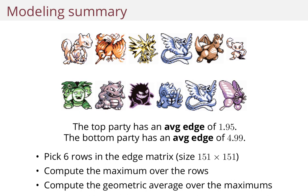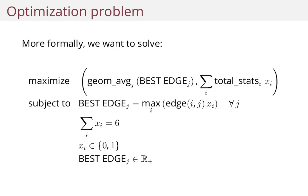And then we compute the geometric average over these maximums — and that's the score. Here are the equations for this optimization problem. You can pause here and look at it if you want to.